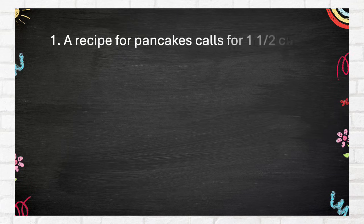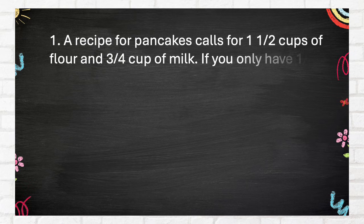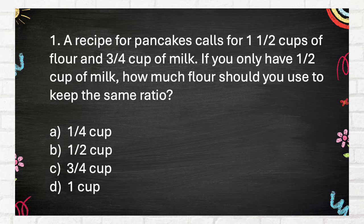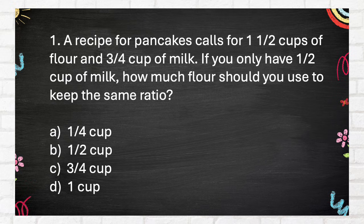Difficult Round. Number 1. A recipe for pancakes calls for 1 and one-half cups of flour and three-quarters cup of milk. If you only have one-half cup of milk, how much flour should you use to keep the same ratio? A. 1 quarter cup. B. 1 half cup. C. 3 quarters cup. D. 1 cup.